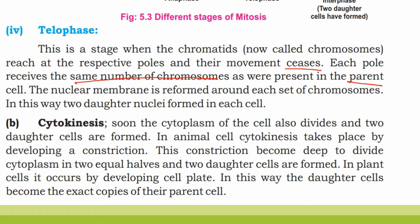Finally, the nuclear membrane is reformed around each set of chromosomes. In this way, two nuclei are formed in each cell. The cell then divides into two daughter cells.